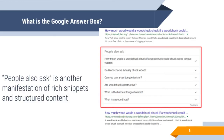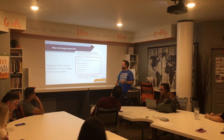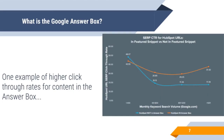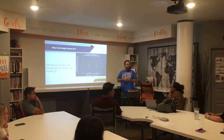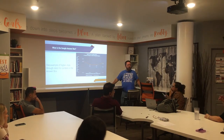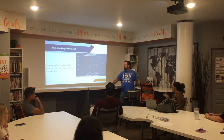'People Also Ask' is another manifestation of rich snippets — another way you can get featured. It's a little maddening because you click one and four more show up and it just keeps growing. Going back to whether this harms your click-through rate — it actually doesn't. HubSpot ran a test comparing results not being in the answer box versus being in it, and they actually got a higher click-through rate with answer box displays.